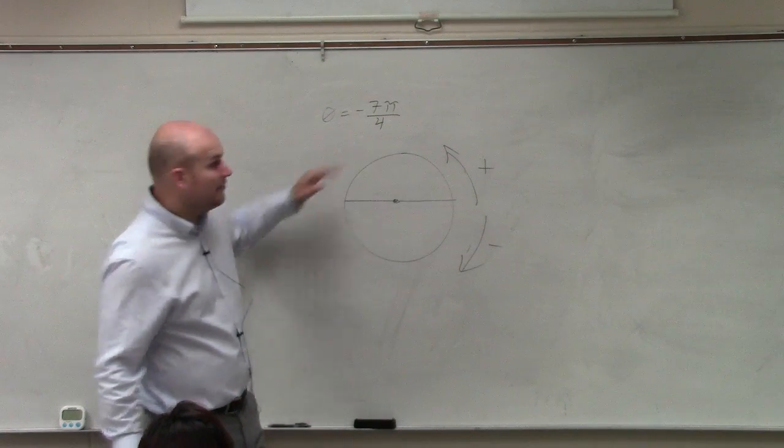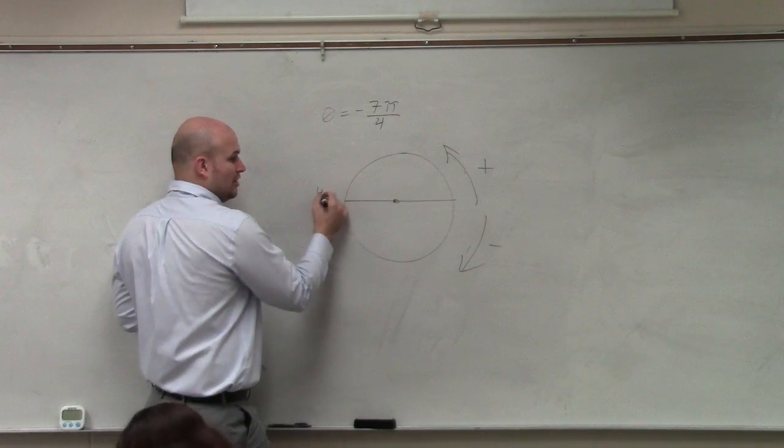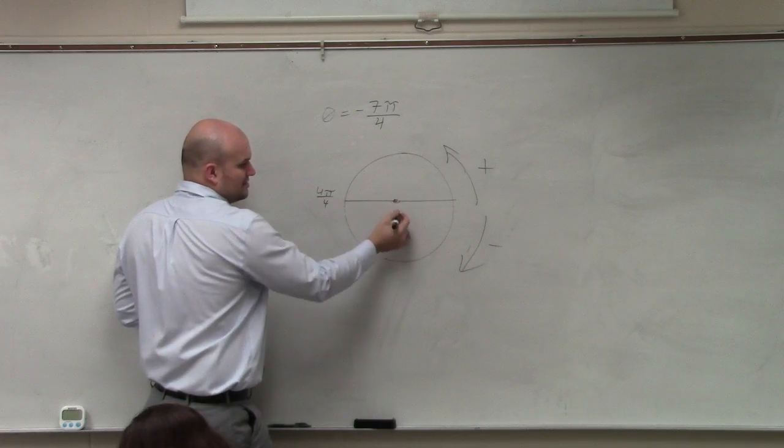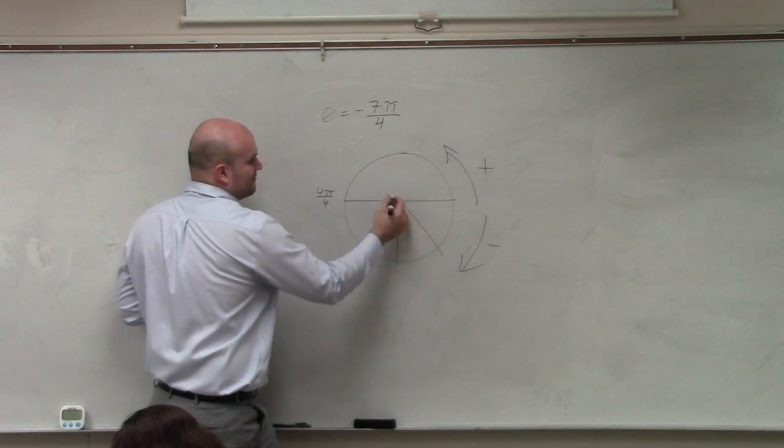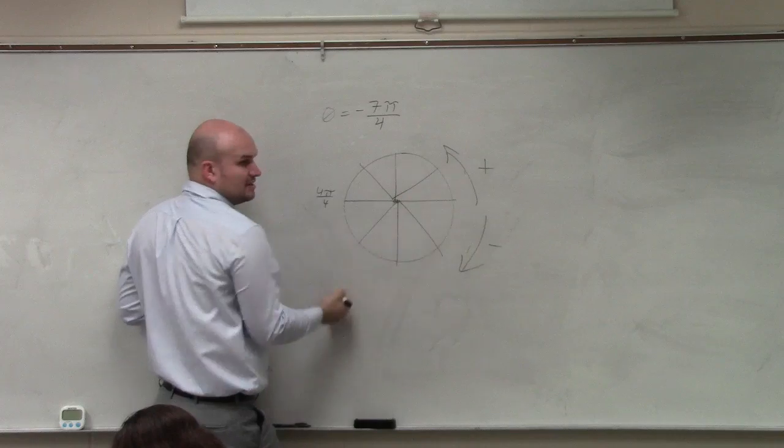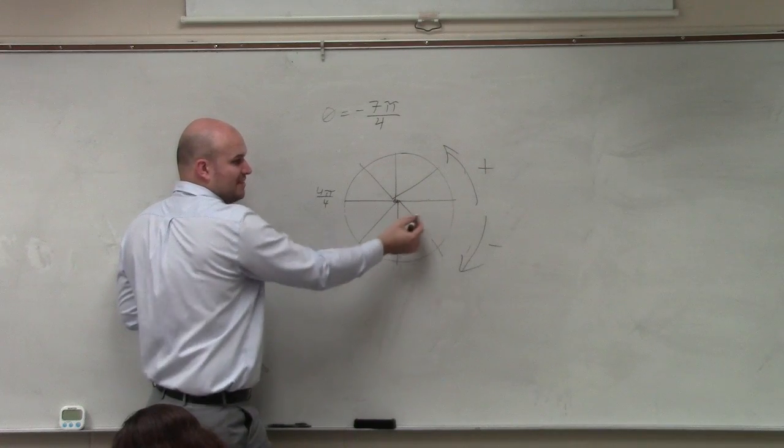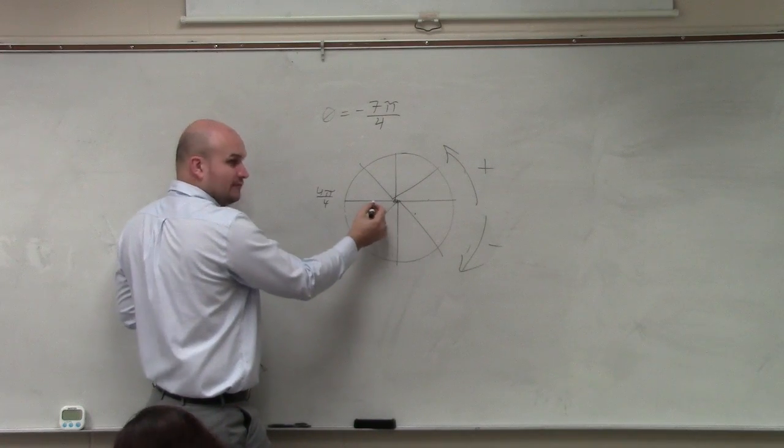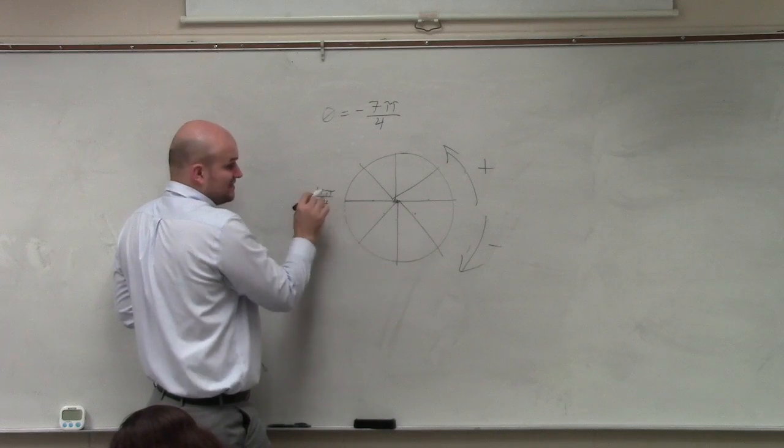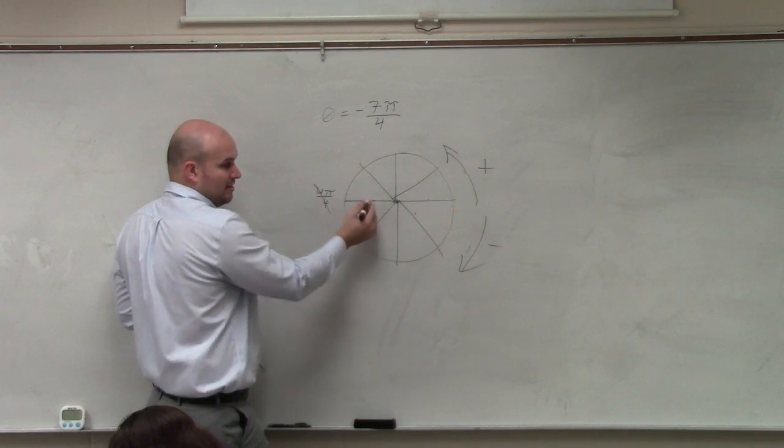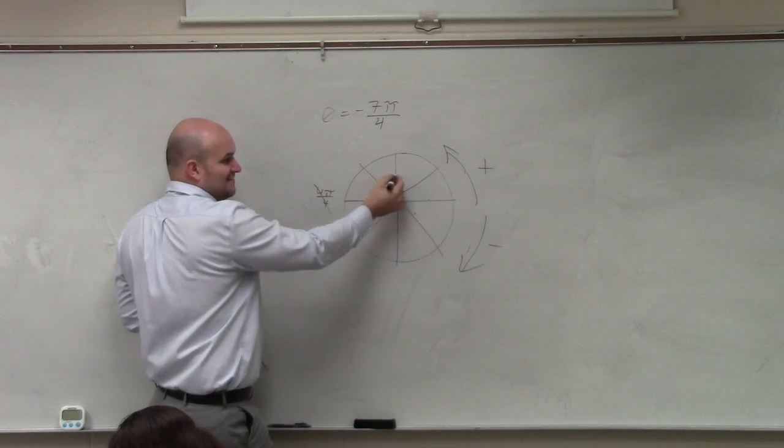For negative 7π over 4, we know halfway around the circle is π, or 4π over 4. I'm going to break this up into fourths. Let's go in the negative direction: π over 4, 2π over 4, 3π over 4, 4π over 4. Halfway around is π. But we need to get to 7: 5, 6, 7.